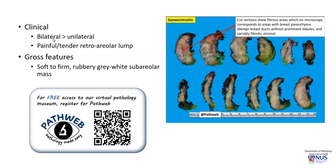Clinically, it is more often bilateral but can sometimes be unilateral, and it is usually painful or tender with a retroareolar lump — a rubbery, grey-white subareolar mass. You can access virtual pathology pictures and the virtual pathology specimen through our free online pathology resource PathWeb; the link for registration is in the video description.